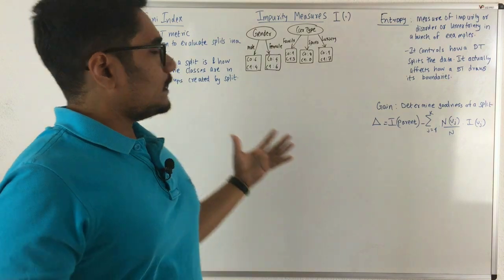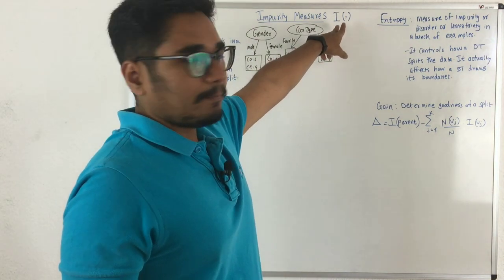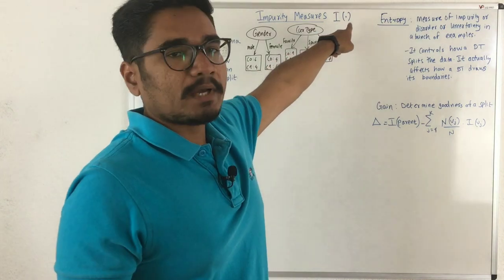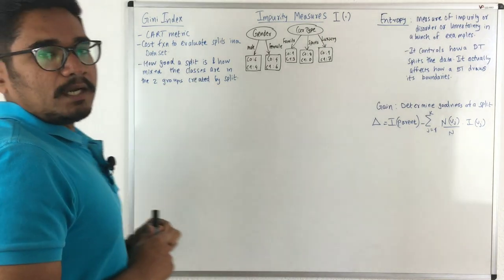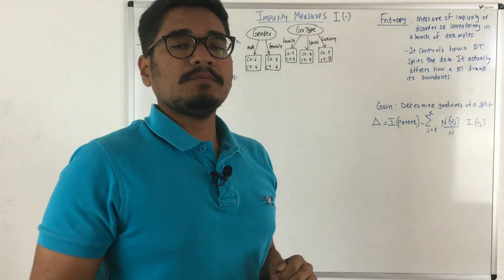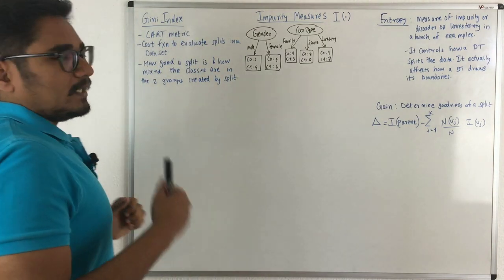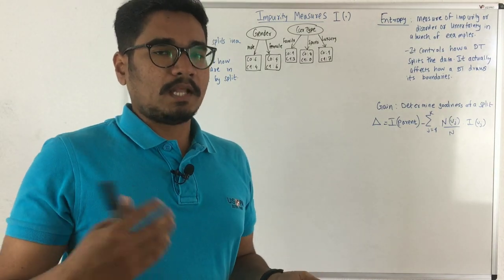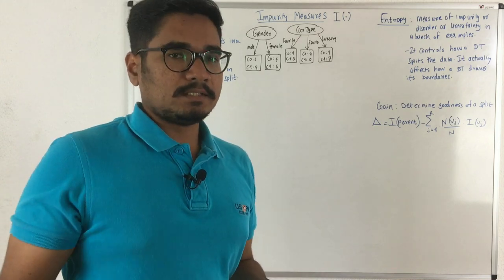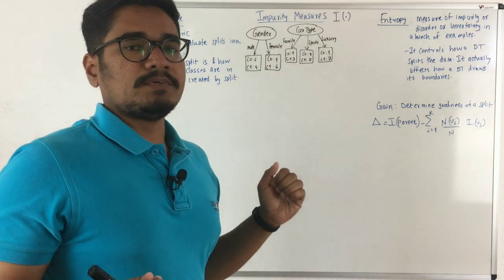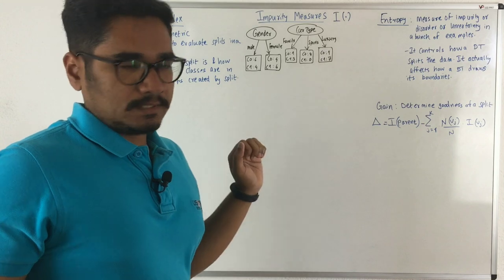The impurity measure is represented with the symbol capital I with a dot operator in parentheses. Let's start with the primary type of impurity measure most used in decision trees, which is the Gini index. The Gini index is basically a CART metric, mainly used in classification and regression trees to build the decision tree in a recursive fashion, and it is used as a cost function to evaluate the best splits in a dataset.